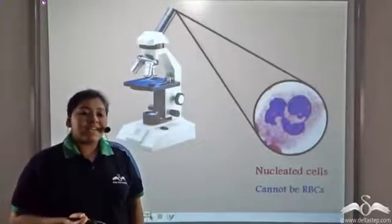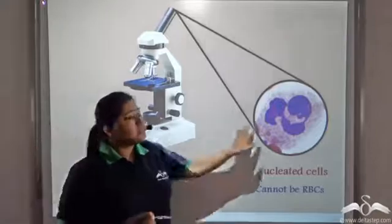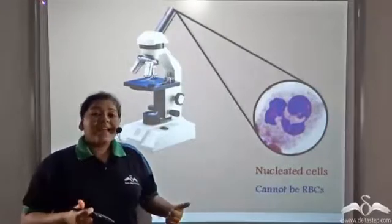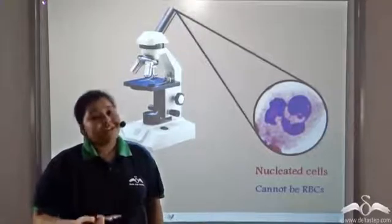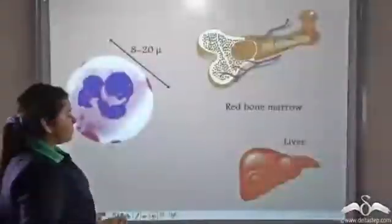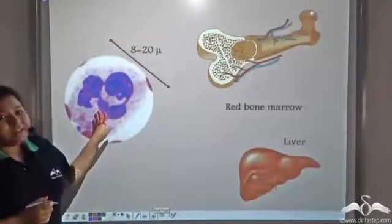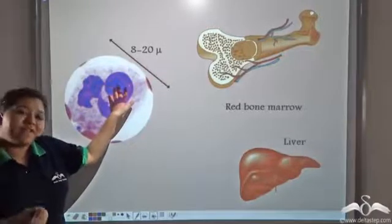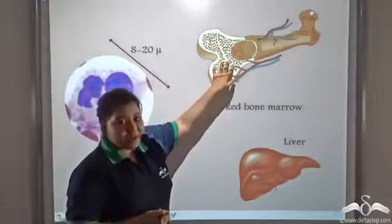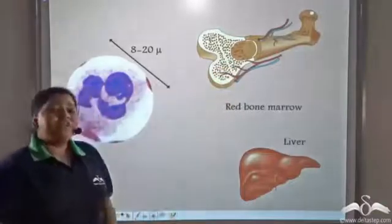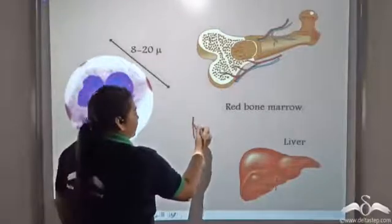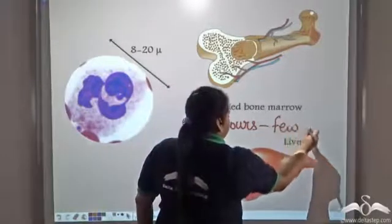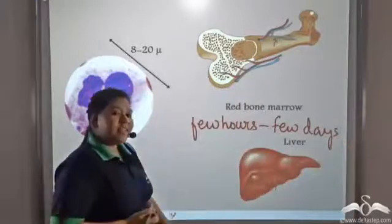If you see a white blood cell under a microscope, you will see that it has a nucleus. So it is a nucleated cell, unlike the red blood cells which do not have a nucleus. The white blood cell has a diameter of about 8 to 20 microns. Similar to red blood cells, white blood cells also get formed in the red bone marrow. It has a lifespan of a few hours to a few days, and then it gets destroyed in the liver.